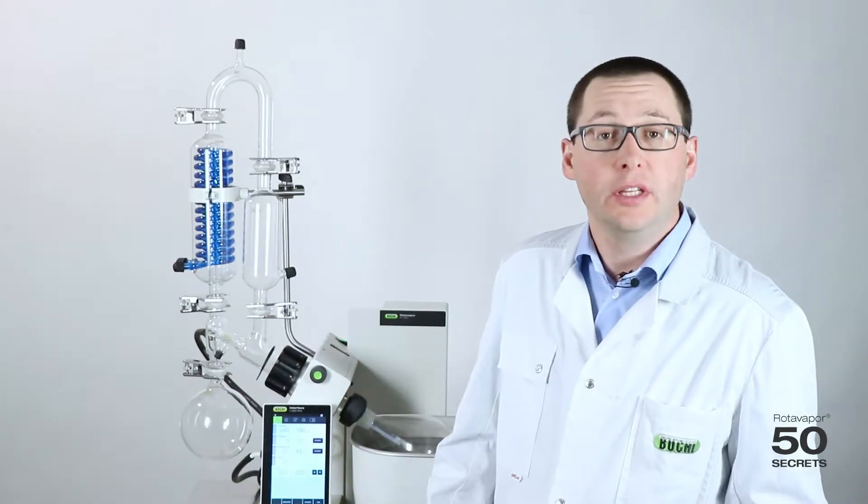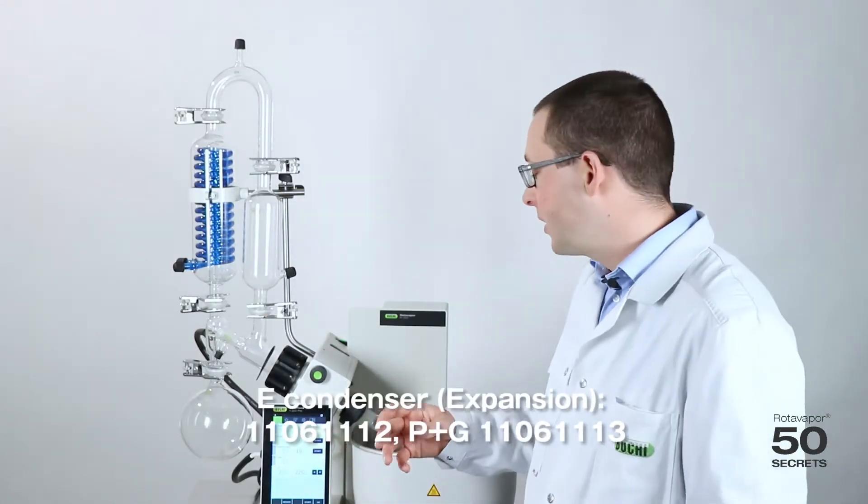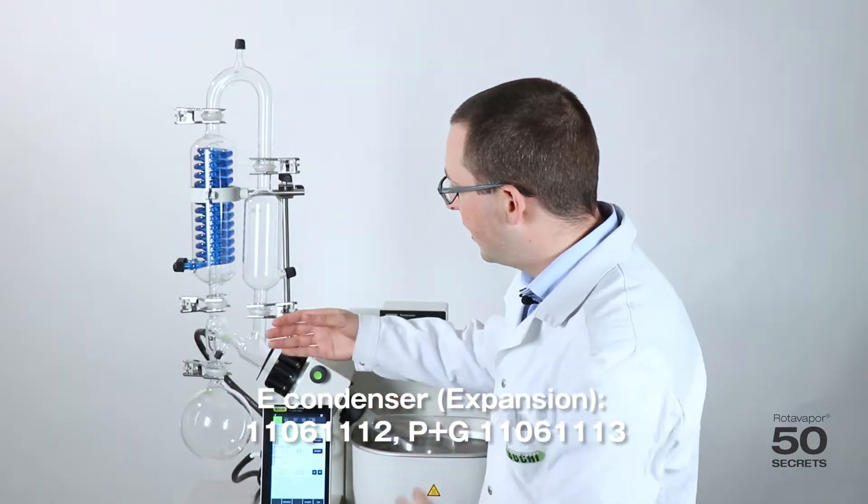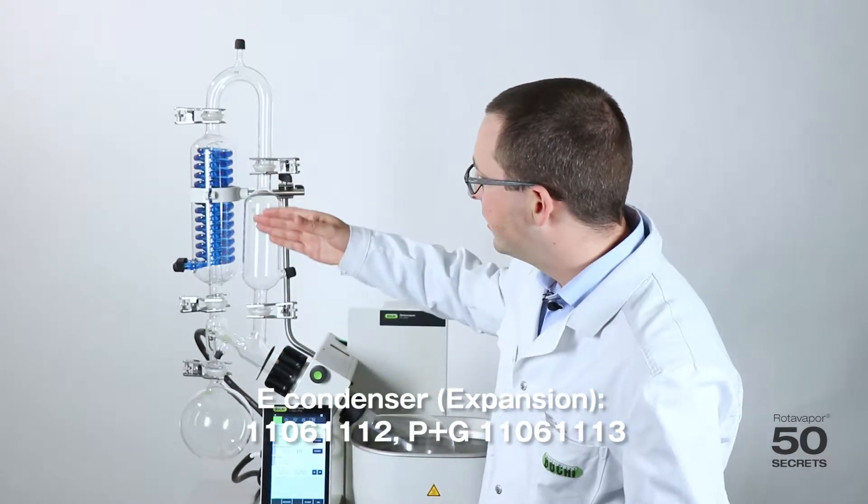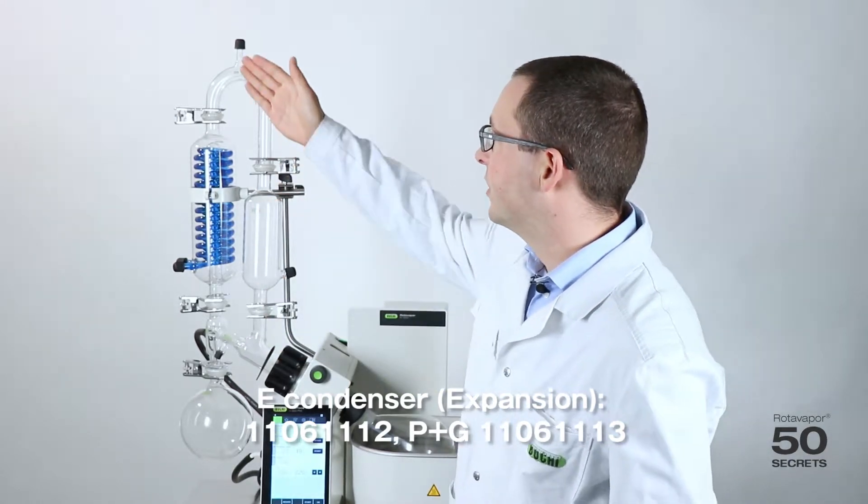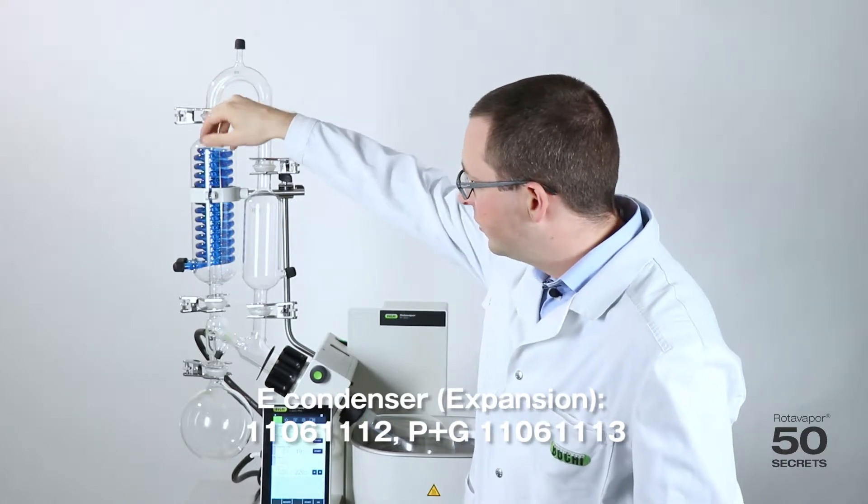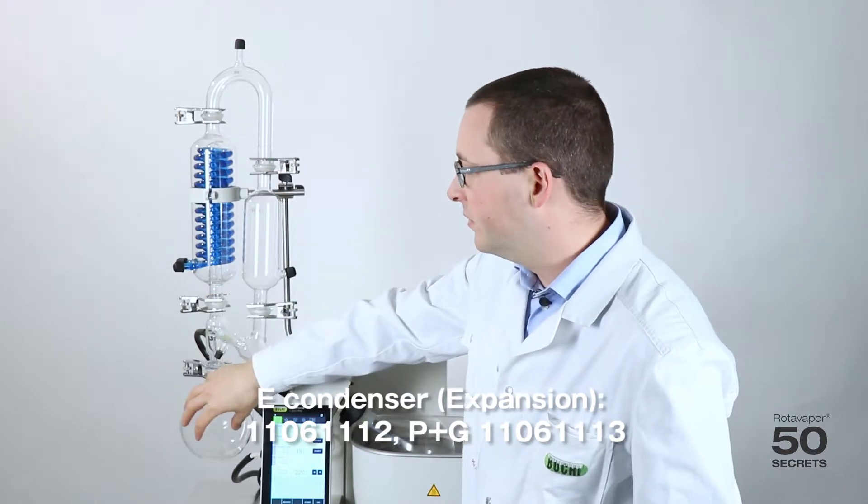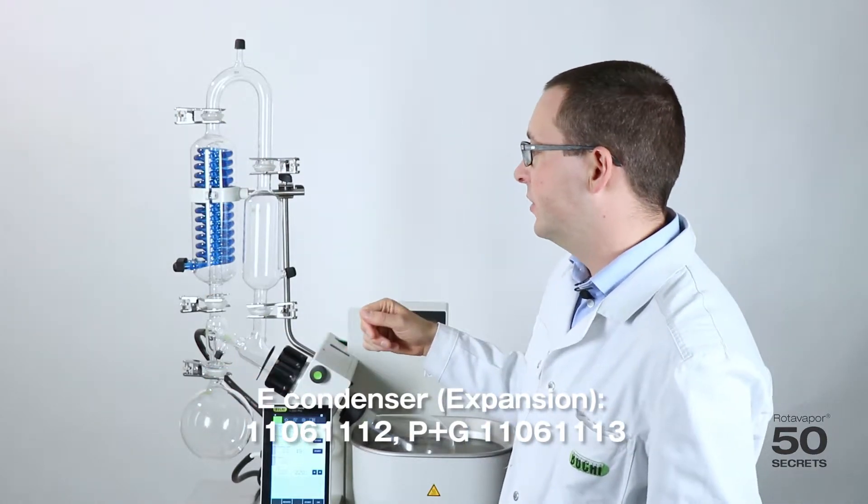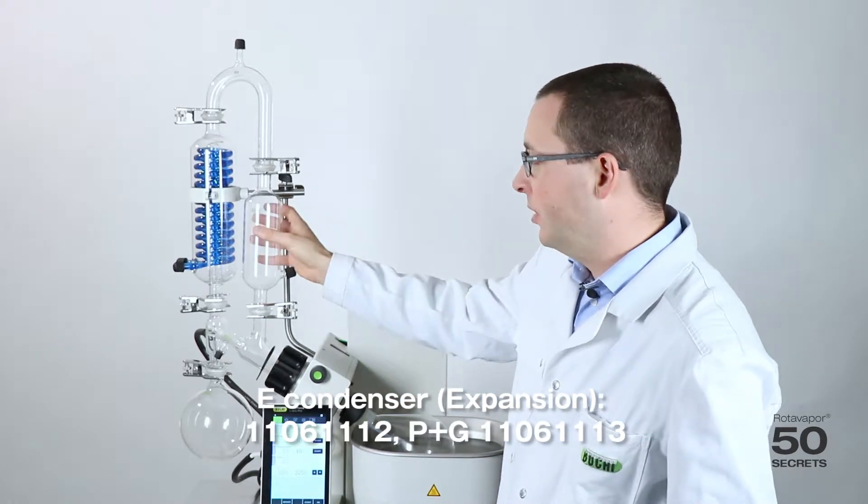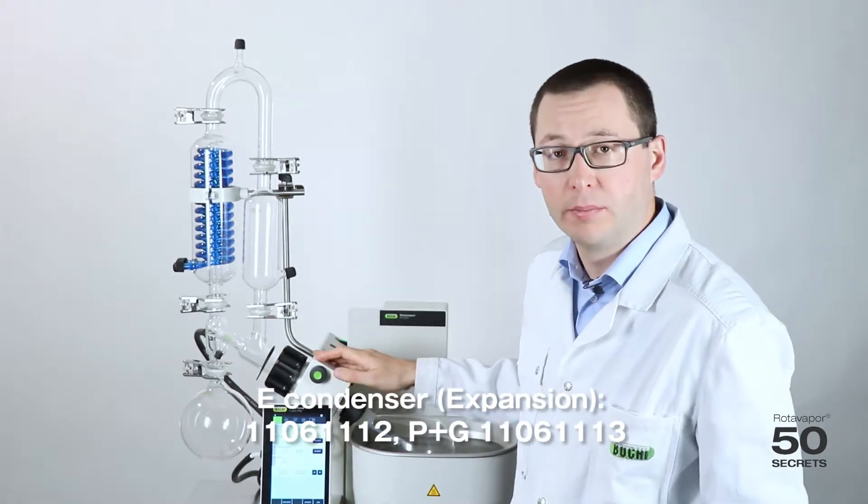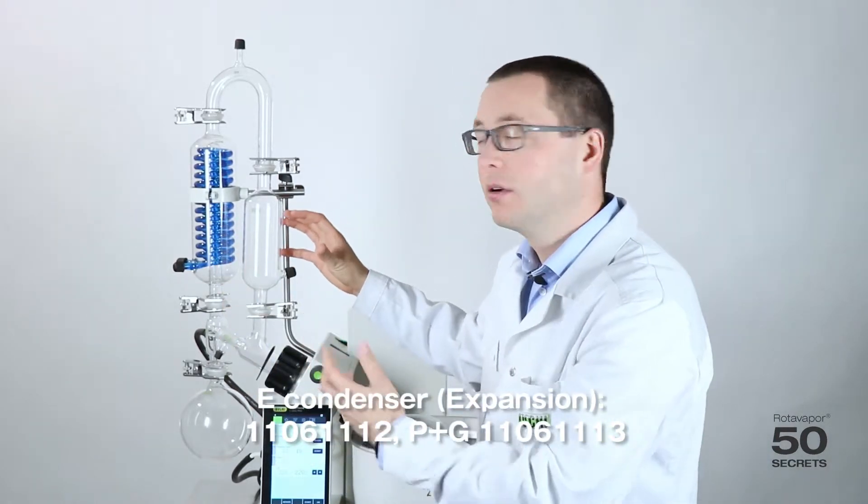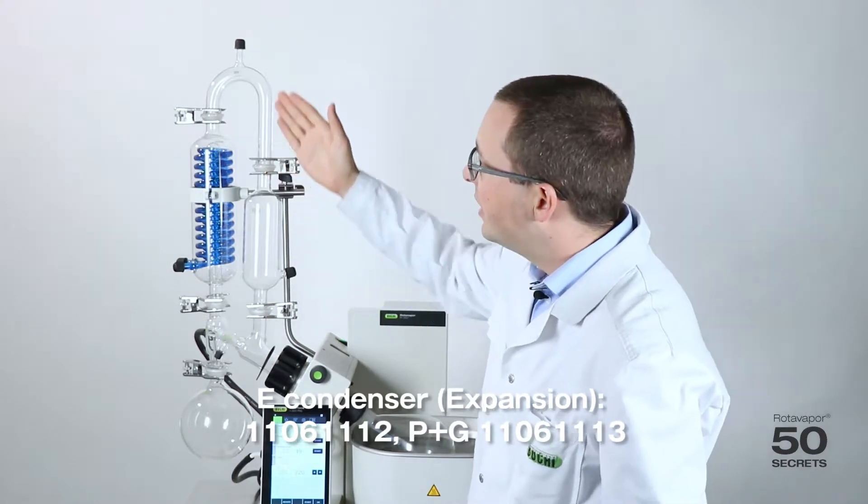This is the so-called E condenser. We call it descending condenser. When we have vapor flowing through the vapor duct it goes through this area over here, the expansion vessel. It then transfers through this bow into the condenser over here. That's why we call it descending and then into the receiving flask. What's the reason why we have this? The main reason is this part here. If you have a foaming or a bumping product it will only go here. It can expand so there is space here and only then the vapor will flow over.